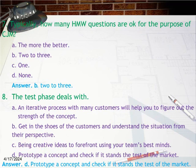Question 7: Typically, how many HMW questions are appropriate for the purpose of CJM? Option A: The more, the better. Option B: Two to three. Option C: One. Option D: None. Answer: B — Two to three.